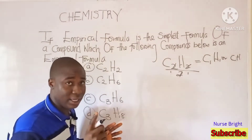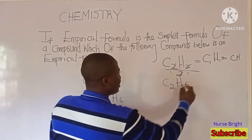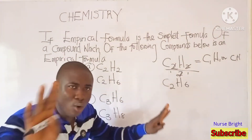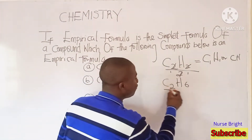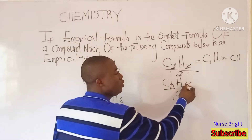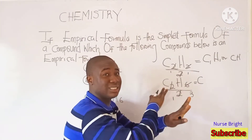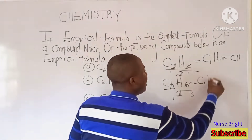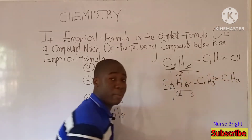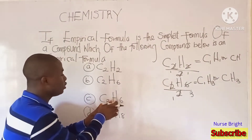Looking at option B, the compound is C2H6. Is C2H6 the simplest form this compound can exist? No, it is not. Dividing by 2 gives us C1H3, or simply CH3. So we are getting the empirical formula — that simplest form — to be CH3. You know this is very popular; it is called the methyl group. So option B is also not an empirical formula.